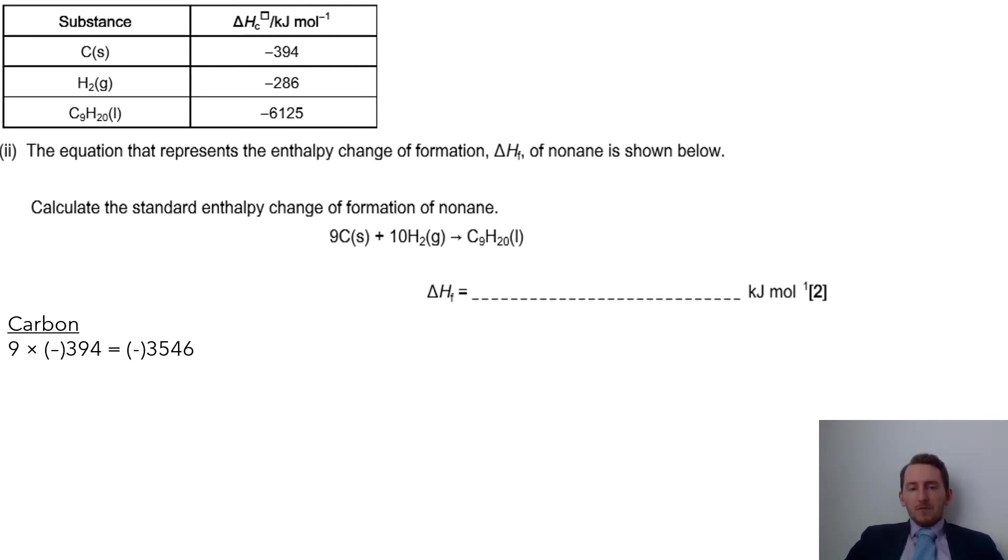For hydrogen I've got a value of -286 and I've got 10 lots of it, so I can times them two together. Then I've got my nonane which is -6125.